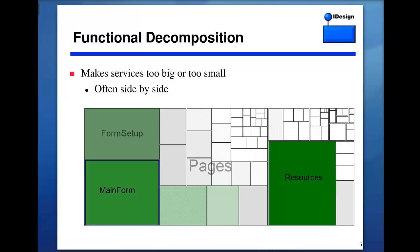Functional decomposition often produces too-small and too-big services side by side. Here's a cyclomatic complexity analysis of a functional system I was called to do a design review on. Look at those giant green objects — MainForm is going to be a nightmare to maintain, extend, or reuse. Why is a form object such an ungainly god object? Why is FormSetup insanely complex? And look at all the tiny little objects running between those god objects — this is not a pretty picture of an architecture.